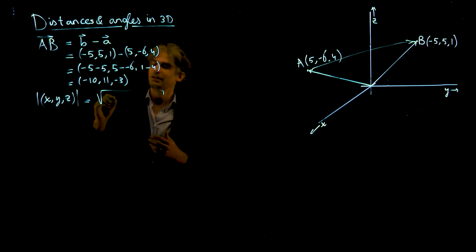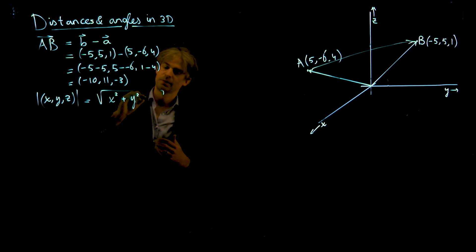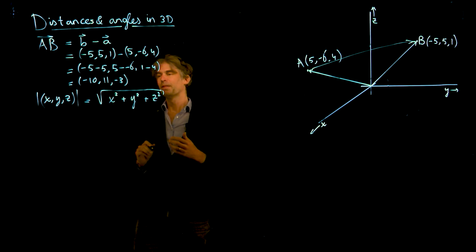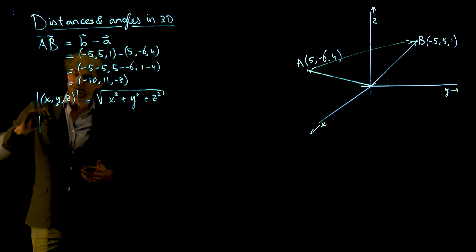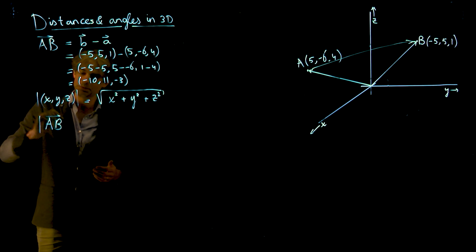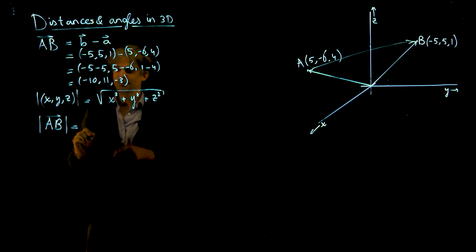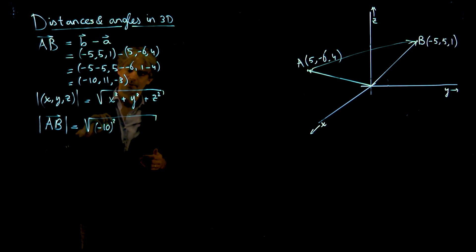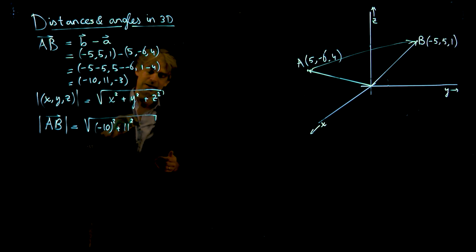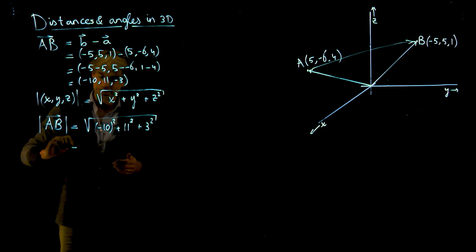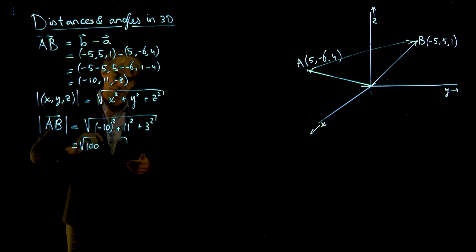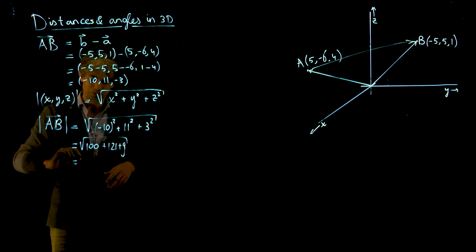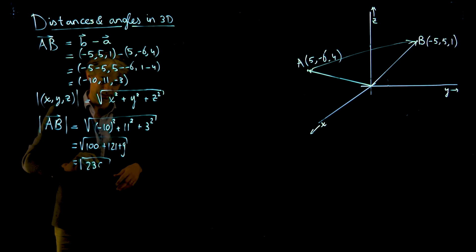Let's apply that here. If we want to compute the length of vector AB and the distance between points A and B, we take this vector and its coordinates and apply this formula. I get minus 10 squared, 11 squared, and 3 squared. That's the square root of 100 plus 121 plus 9, the square root of 230. That's the distance between those two points.